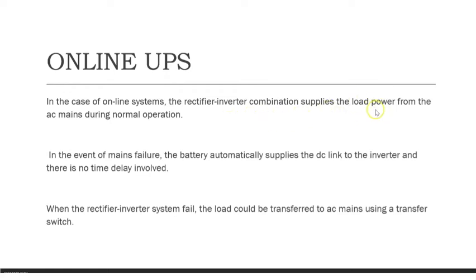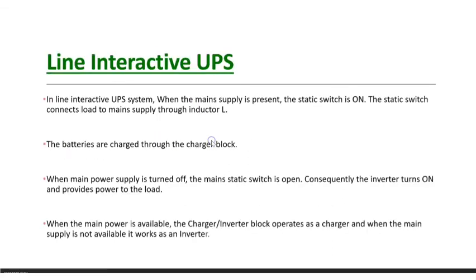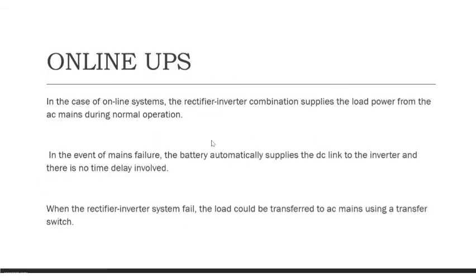In online UPS, the rectifier-inverter combination supplies load power from the AC mains during normal operation. Even if the power supply is present, this UPS is working — the rectifier-inverter combination is always providing electric power to the load. In the event of a main supply failure, there is a battery present in the online UPS that will start to supply the power.